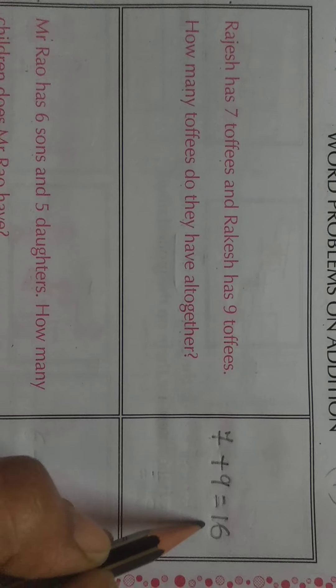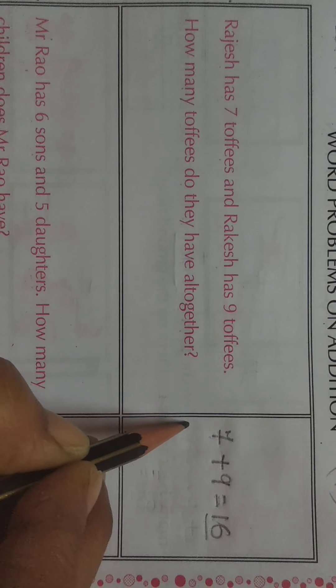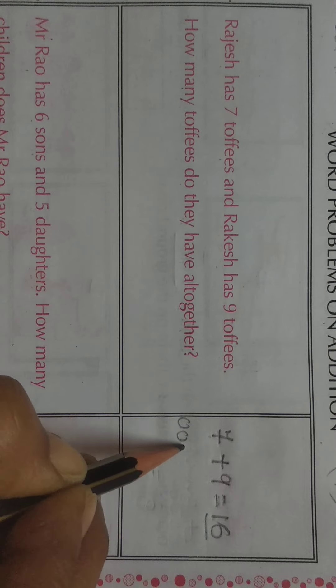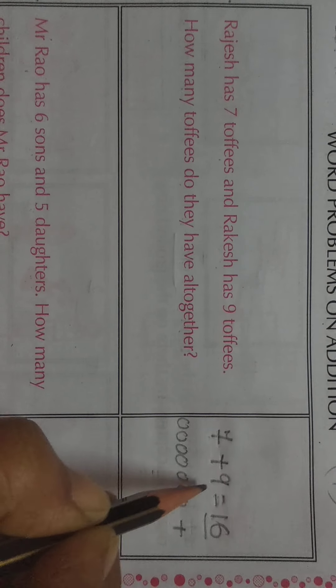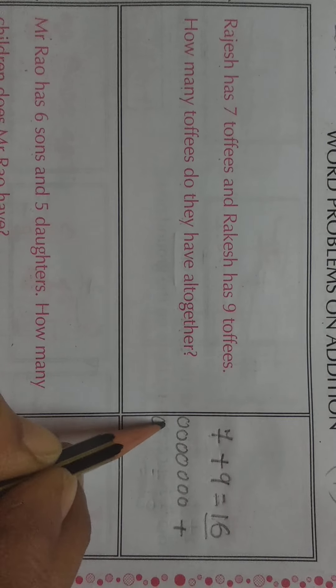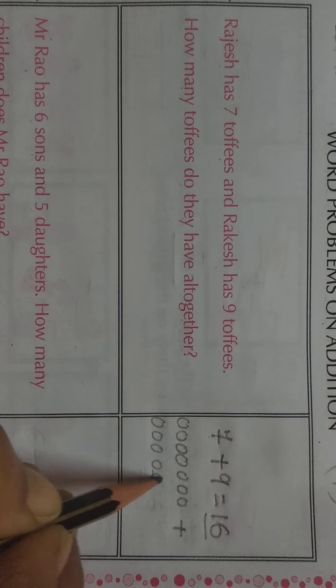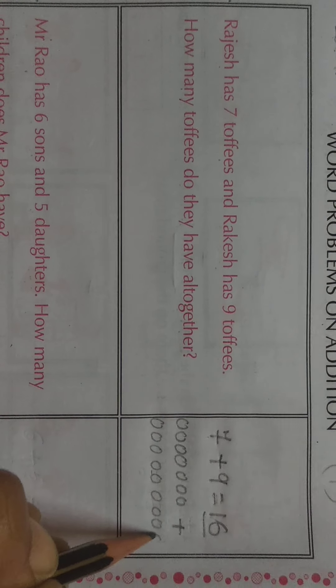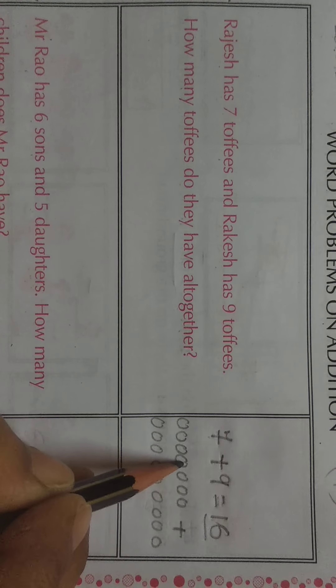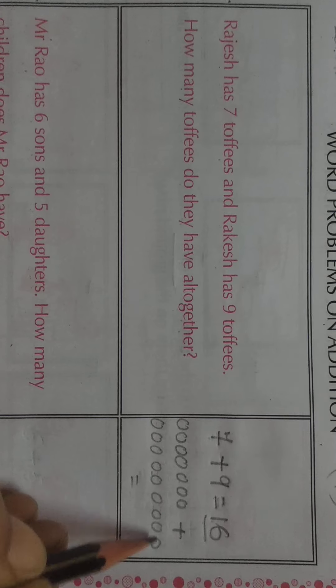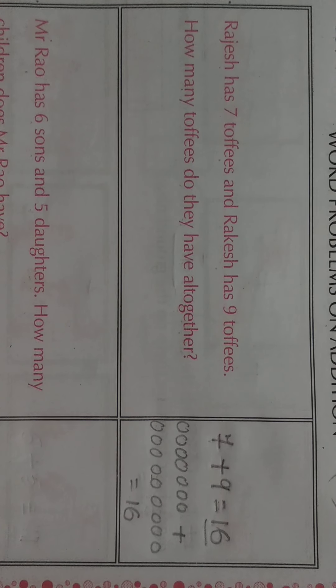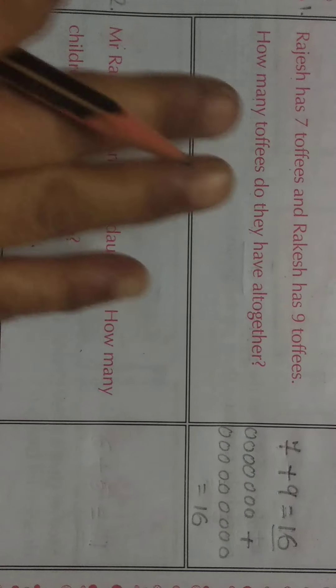This is the way to count the numbers. And one more method, second method is just draw 7 small circles. 1, 2, 3, 4, 5, 6, 7. Plus for 9, 9 circles. 1, 2, 3, 4, 5, 6, 7, 8, 9 is equal to 1, 2, 3, 4, 5, 6, 7, 8, 9, 10, 11, 12, 13, 14, 15, 16. Answer is 16. In this way you can count and add the numbers.